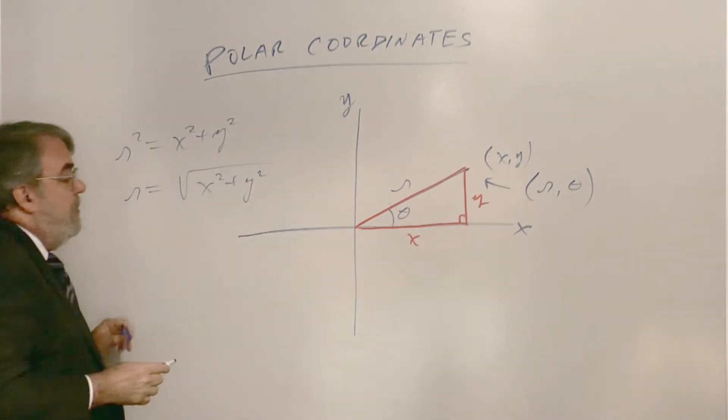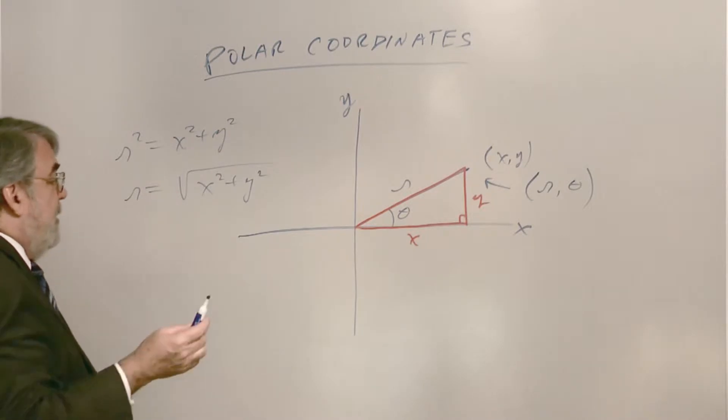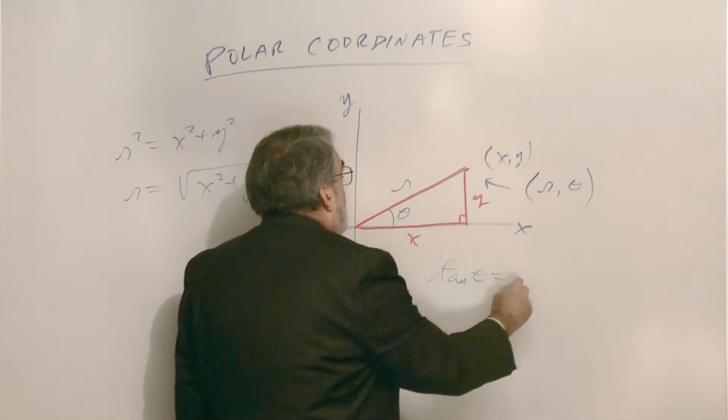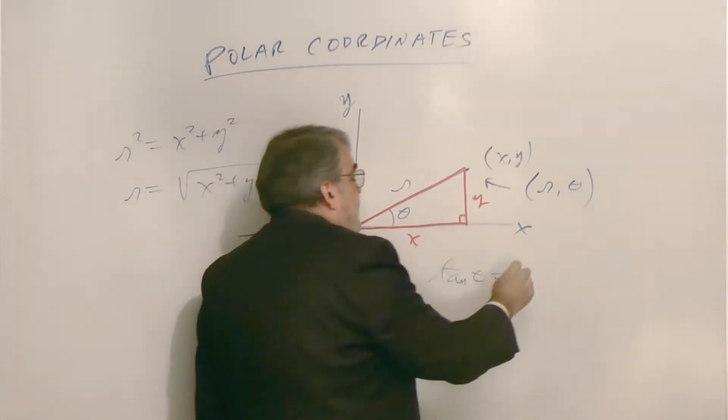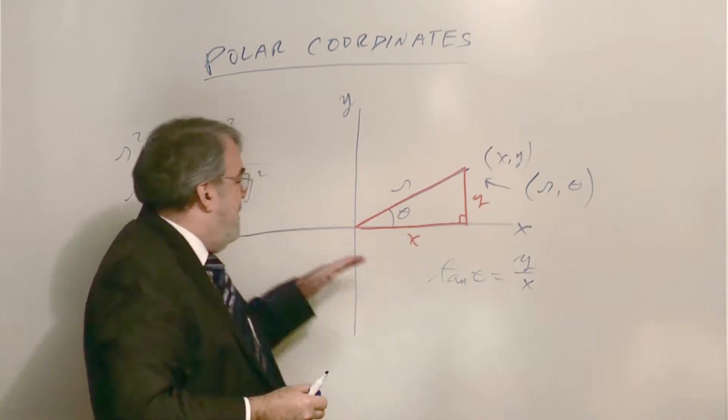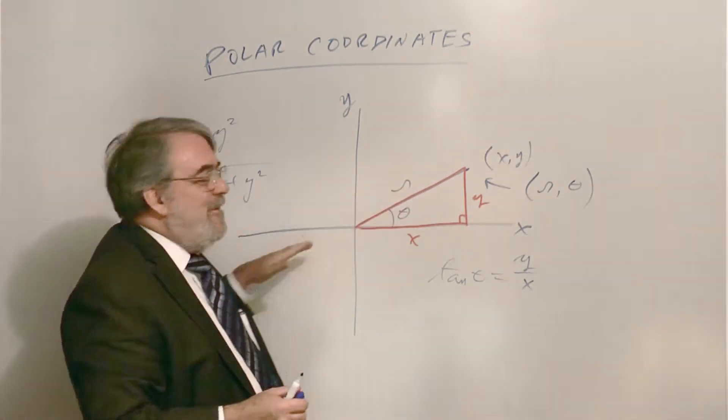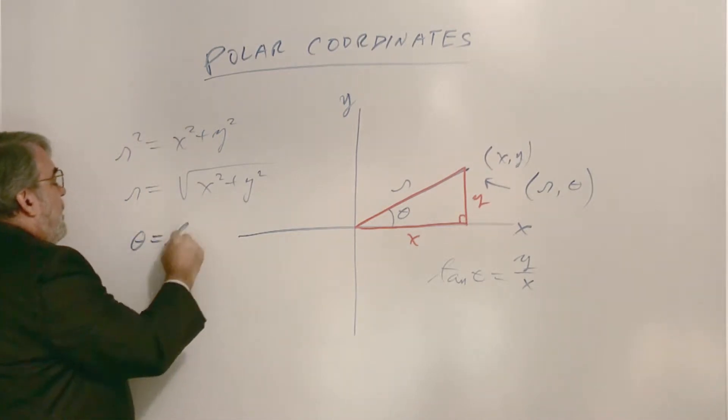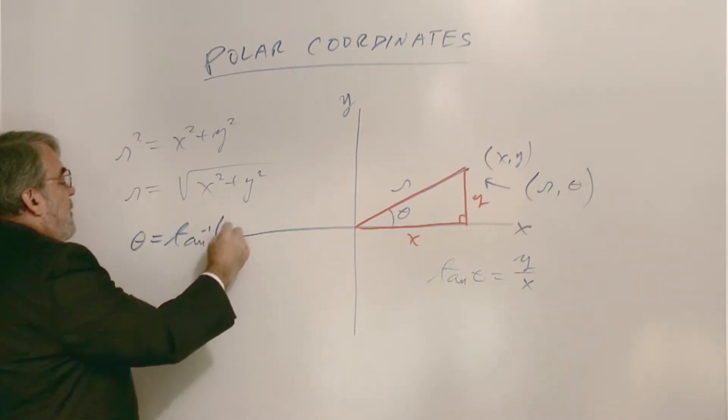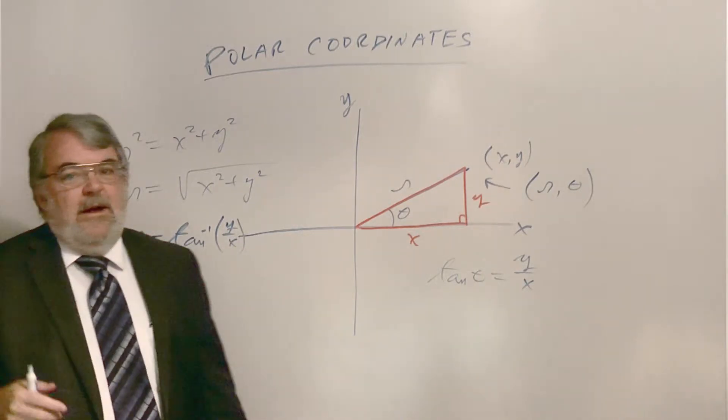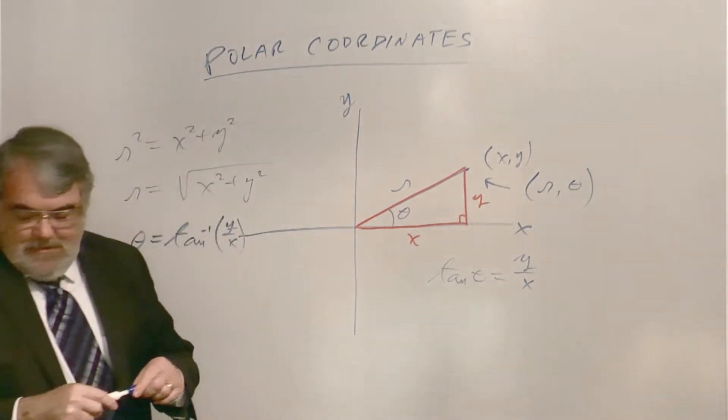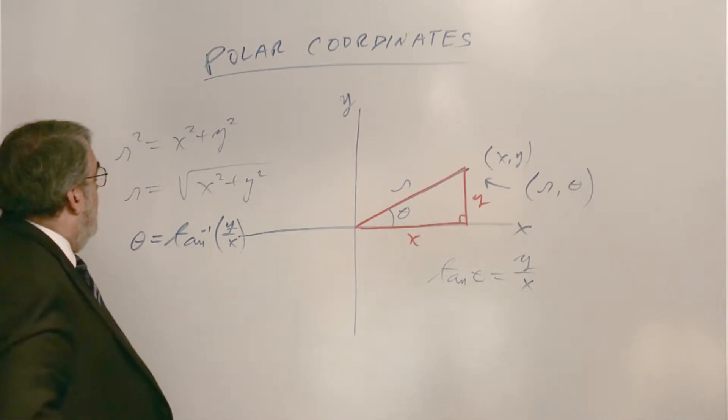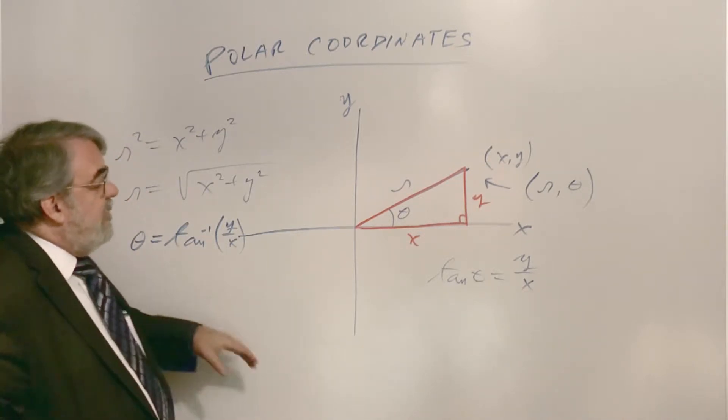Now then, what about the angle? Well, the tangent of theta is Y over X. You notice that's the slope of this line going through the origin. And so theta is going to be the inverse tangent of Y over X. But now we have one little complication because your calculator is going to give you theta, the inverse tangent, to be in quadrant one or quadrant four.